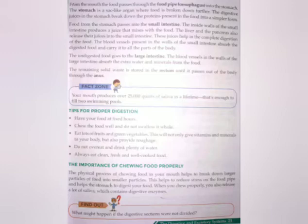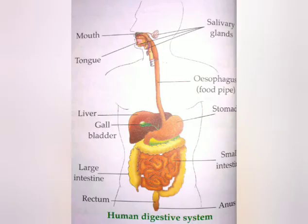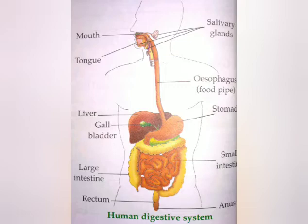In short, food passes from the mouth to the stomach through the food pipe, then to the small intestine. Some secretions from the liver and pancreas are released into the small intestine for complete digestion. Then it passes to the large intestine, is stored in the rectum, and then passes out through the anus.